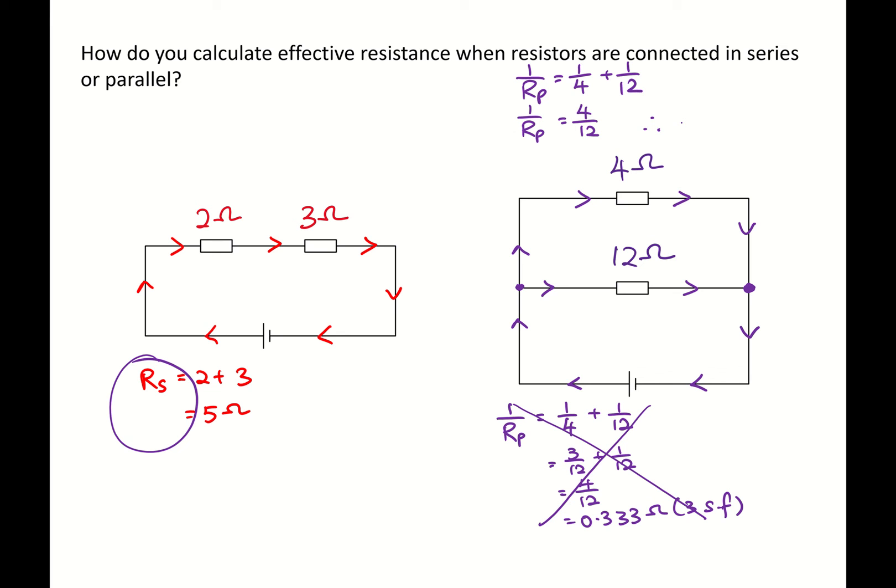And therefore Rp equals 3 ohms. So once I write the full equation I'll remember to do a reciprocal at the end to get the effective resistance across a parallel connection.